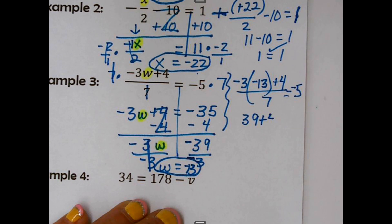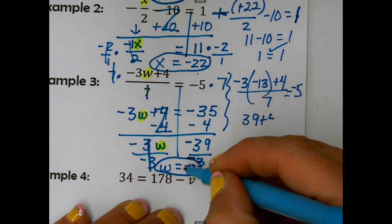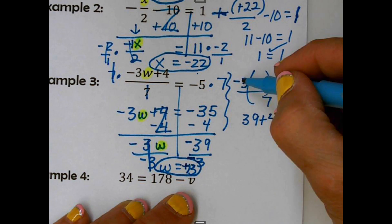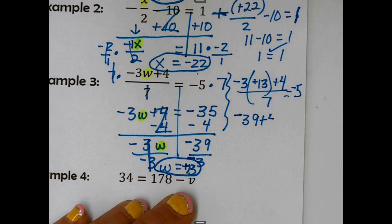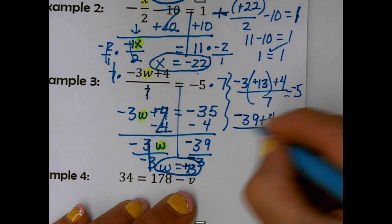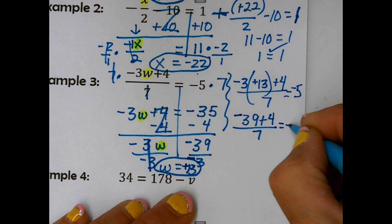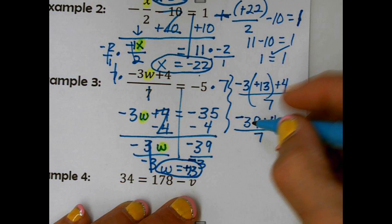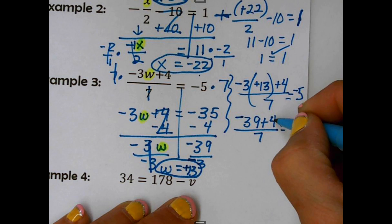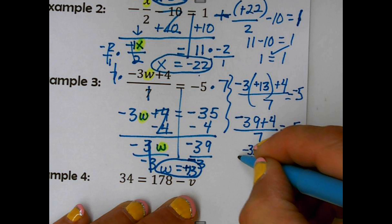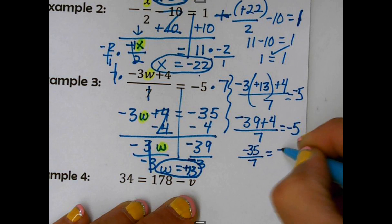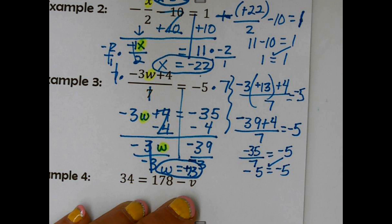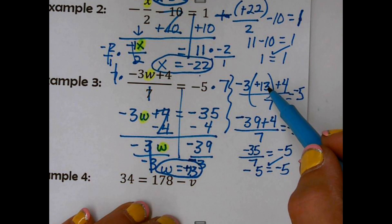So negative 3 times 13 is negative 39. See, I knew I was checking it and it wasn't going to work. And you probably spotted that, that the answer was positive. So now when I check it, negative 39 plus 4 is negative 35 divided by 7. There's my check. Negative 5 equals negative 5. So yeah, that's a perfect example. I had negative 13 there and I knew that just was not going to work out correctly. It happens. That's why you should always check it.